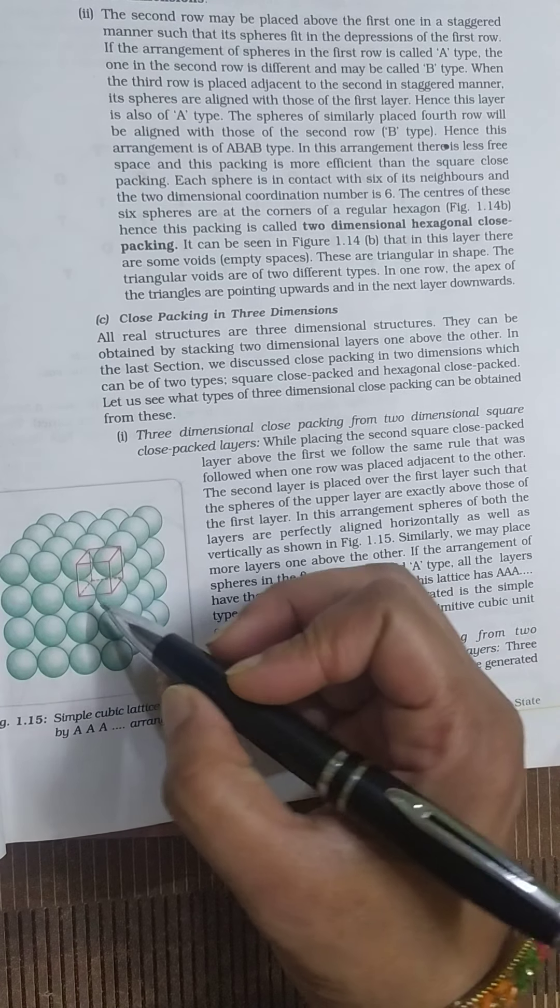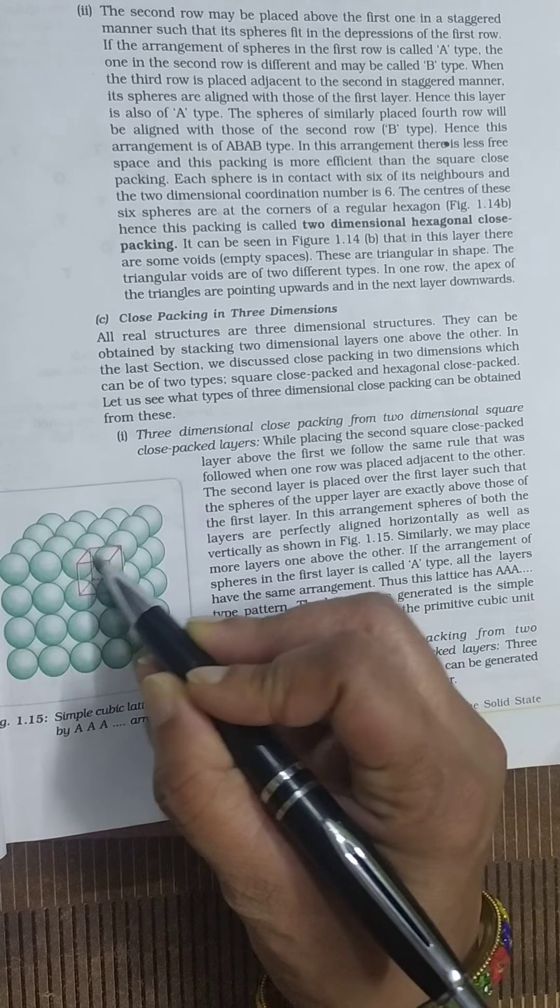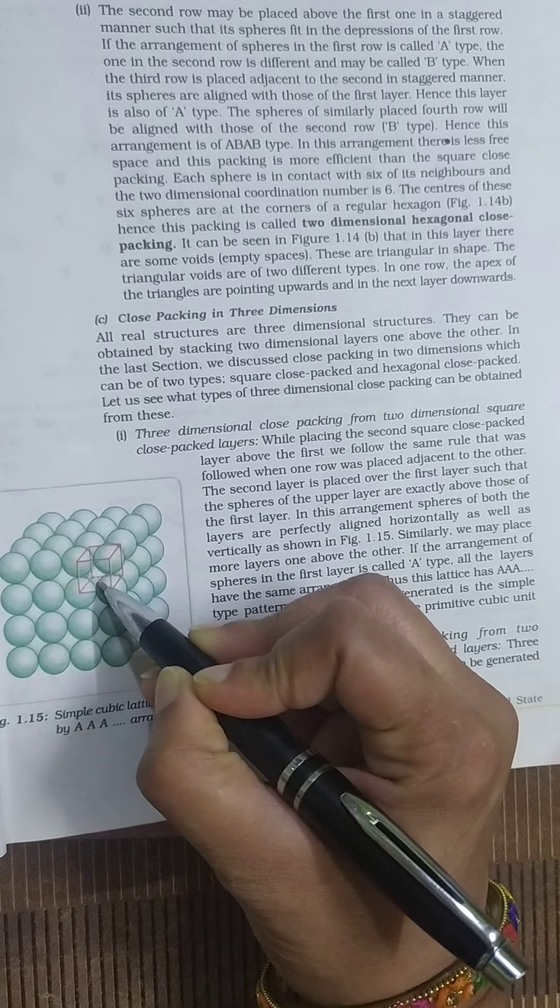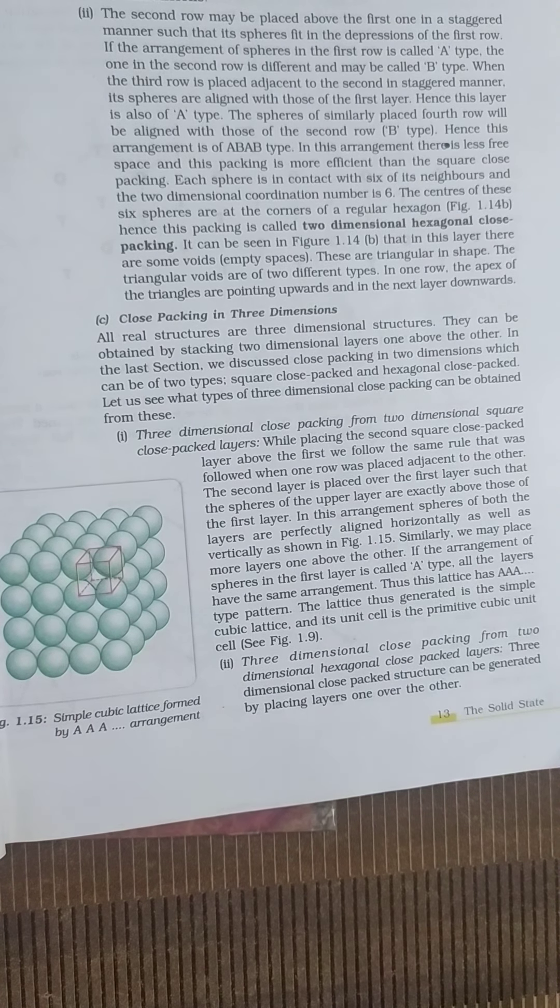If you see carefully, there is a void created here. This is cubic close packing, and if you can see here, this is a void created. This is a tetrahedral void created here.